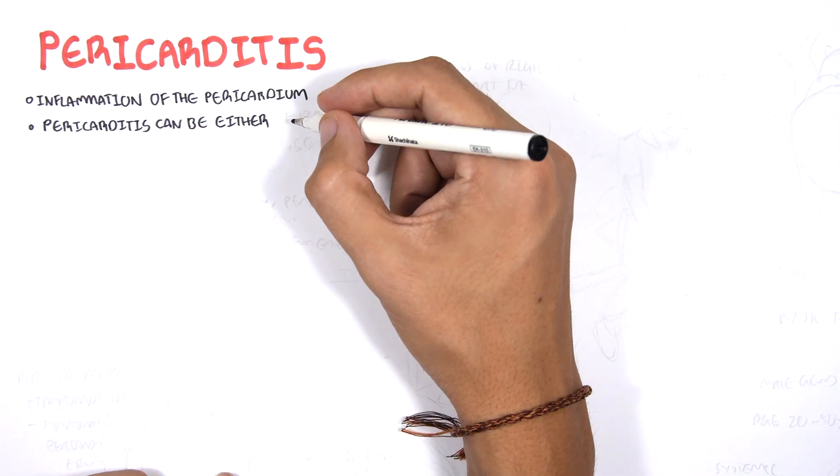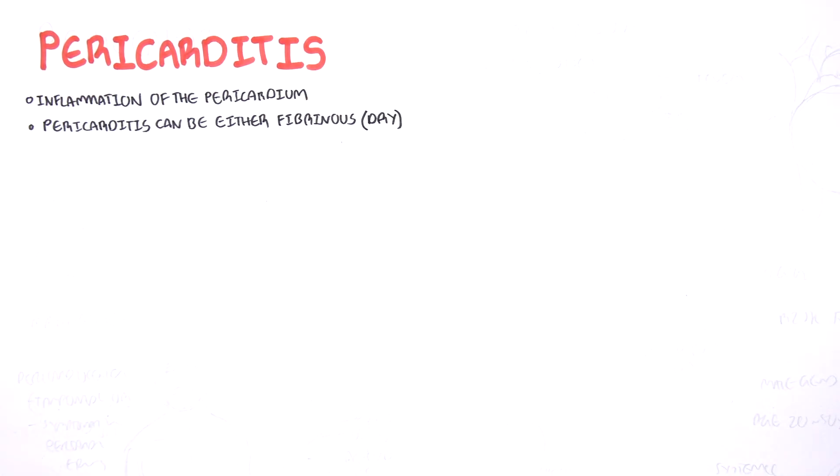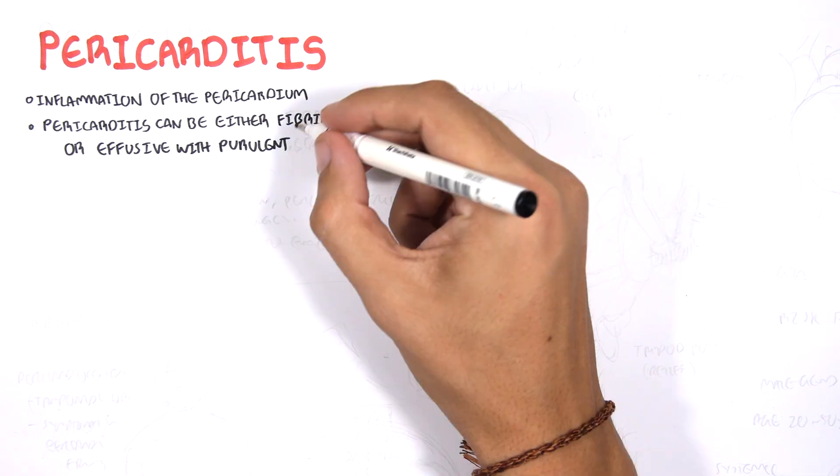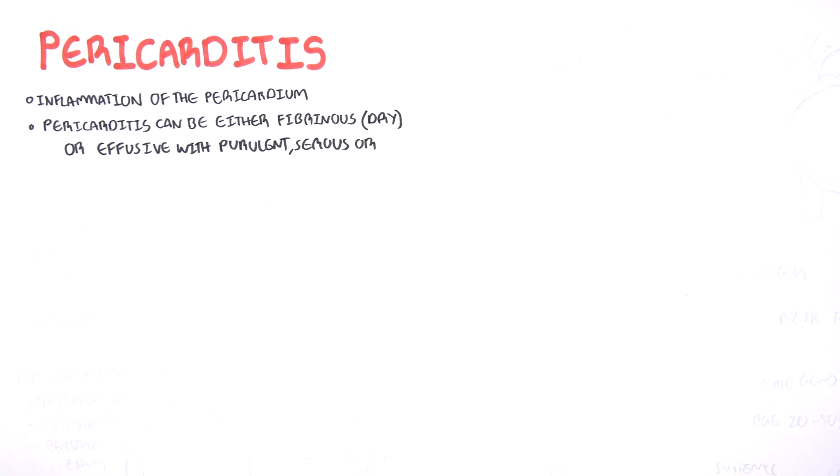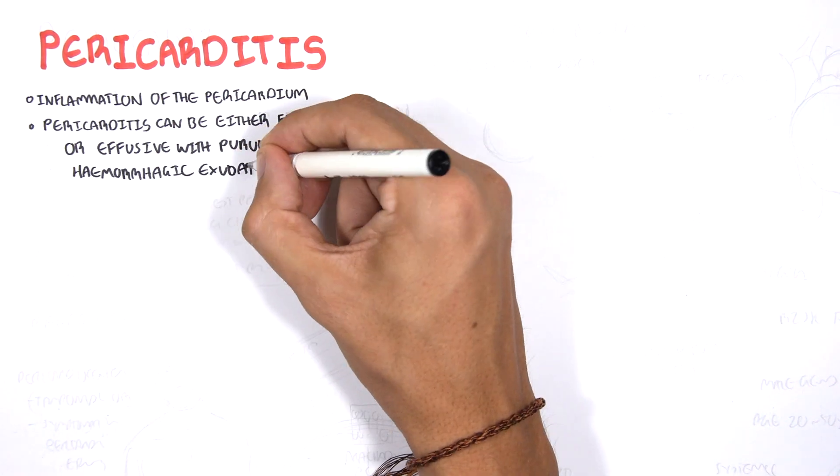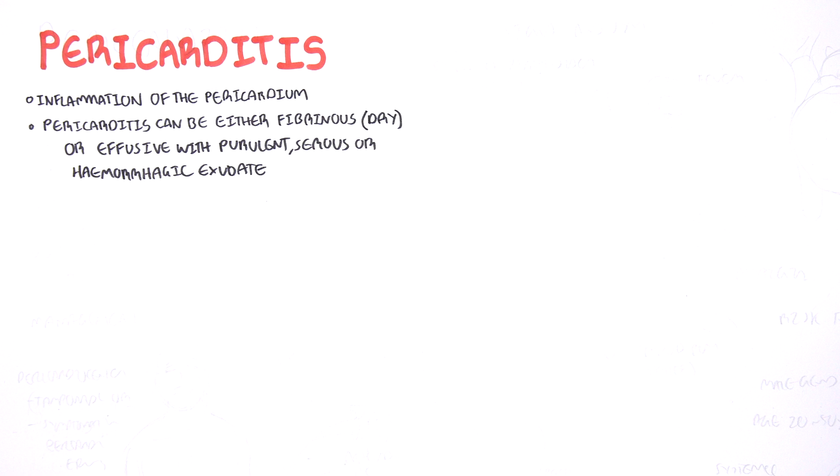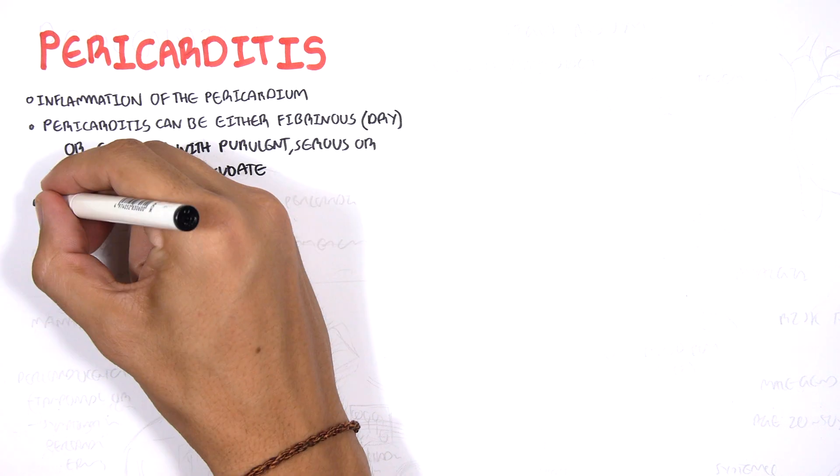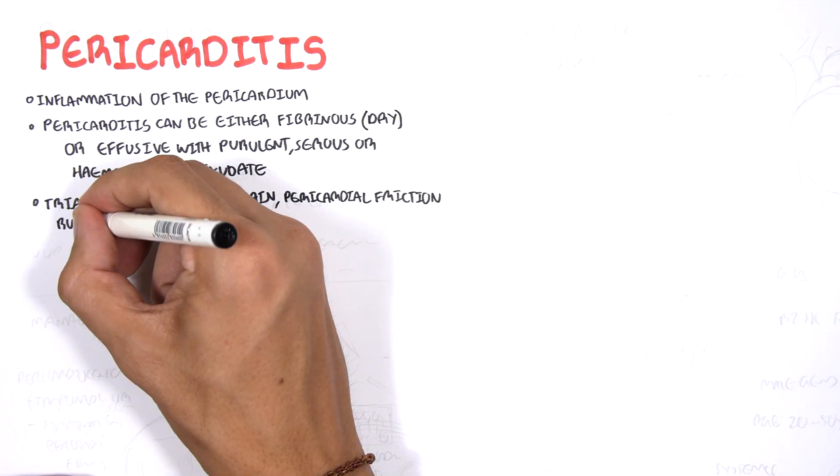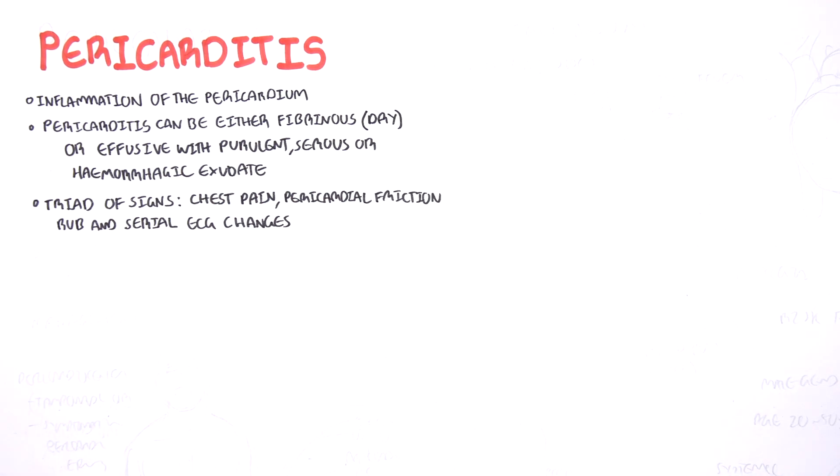Pericarditis is inflammation of the pericardium. Pericarditis can be either fibrous, dry, or effusive with purulent, serous, or hemorrhagic exudate. The triad of signs for pericarditis include chest pain, pericardial friction rub, and serial ECG changes.